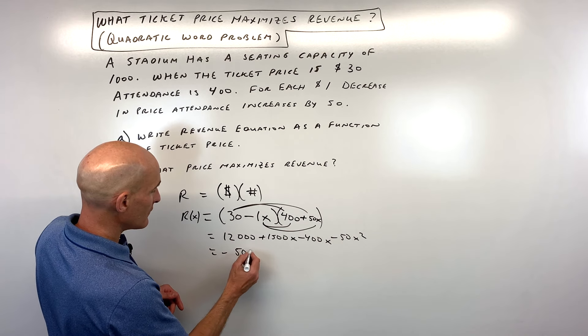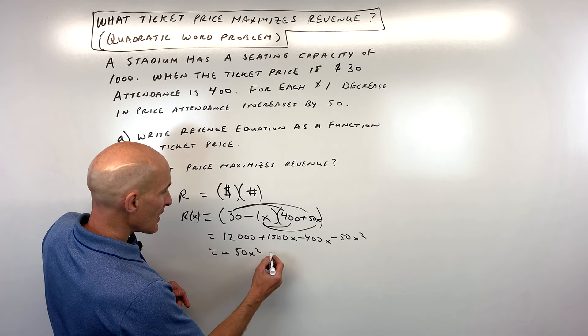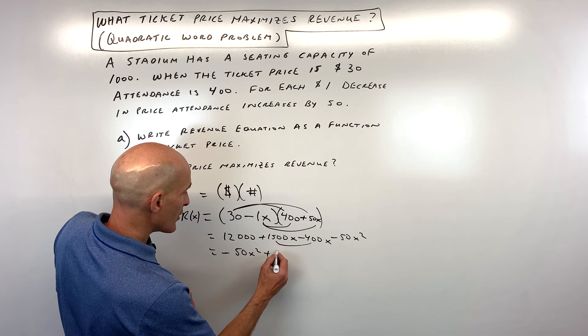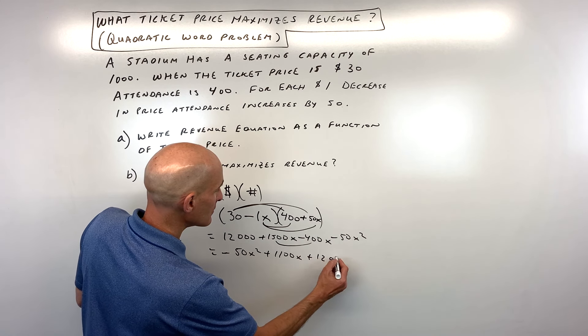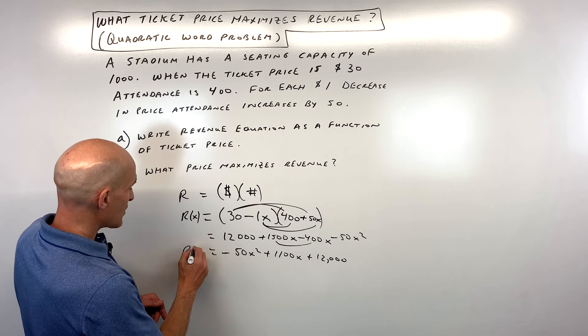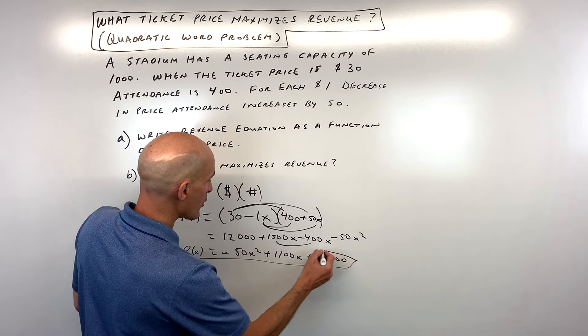Let's put this in descending order. So we have negative fifty x squared. This comes out to eleven hundred x. And plus twelve thousand. Okay, so that's our revenue equation right there. That's part a.